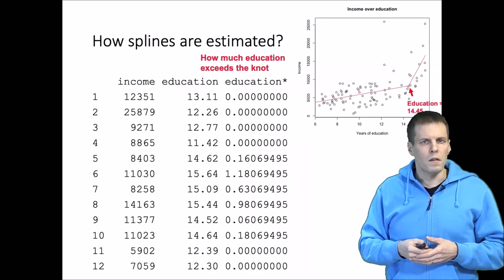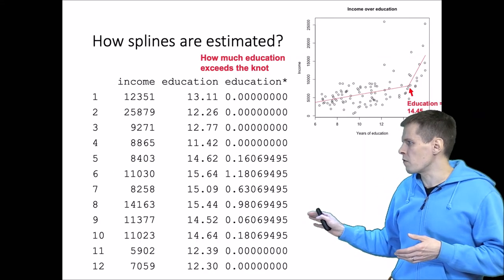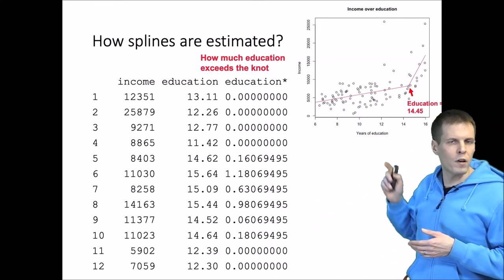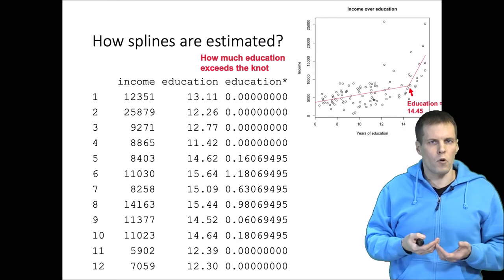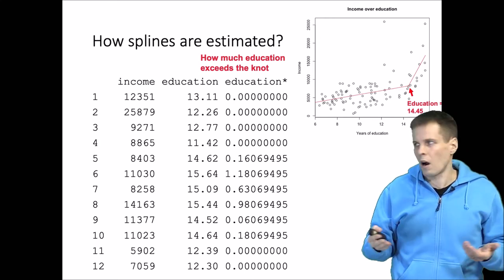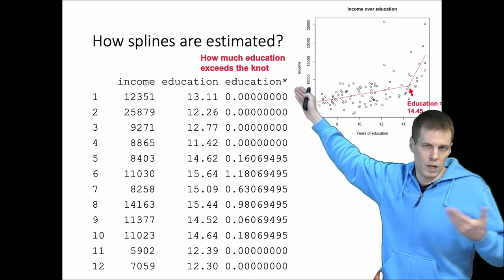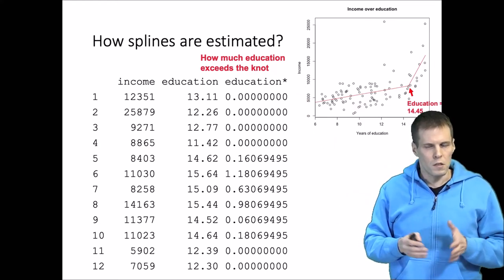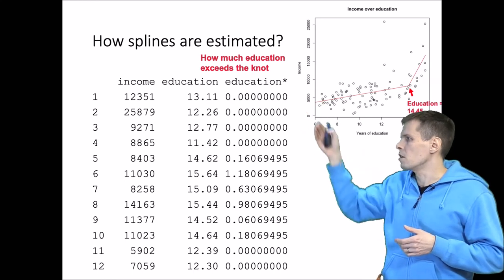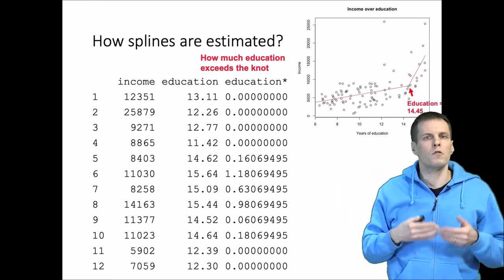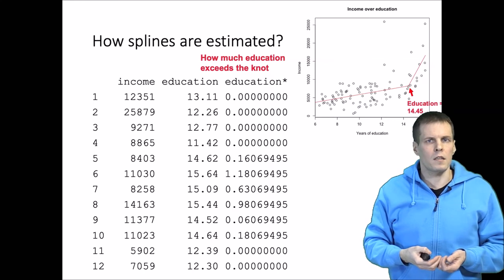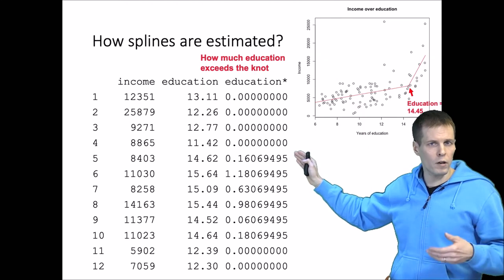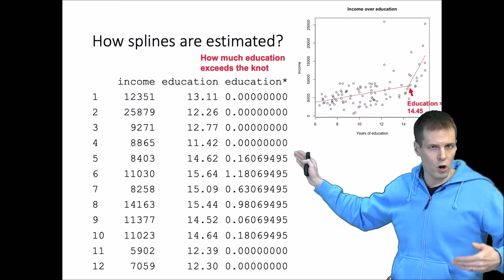Let's take a look at the data. So this is some information. There are the first 12 observations and if we know the knot, that it's 14.45, we can calculate a new variable called education star. This name of the variable does not have any significance or importance. It is just something that I decided to use. So the star is not the convention here. So we have education and then we have education star which tells us how many years of education this particular observation has more than the knot.